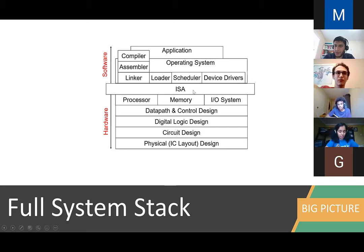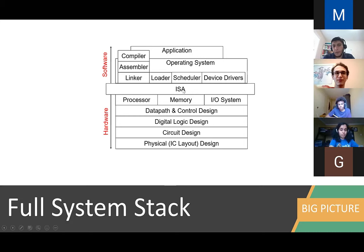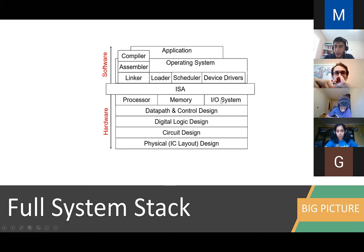ISA, or instruction set architecture, is basically the contract between the software and the hardware. And then beneath the ISA, you would find your hardware — in your laptop or mobile phone you have a processor, memory, and an I/O system like a screen or keyboard. And then beneath this, you have some kind of detailed logic layers that we will see later.